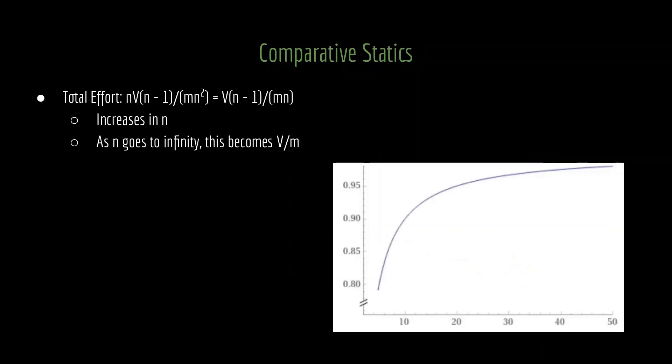The second comparative static is on the total amount of effort. And to calculate that, all we have to do is take the individual effort and multiply it by n, because we have n individuals all producing that amount. And if we do that, that gives us a total effort level of v times n minus 1 divided by m times n. This amount increases in n. So despite the fact that adding a group decreases individual effort, the aggregate amount of effort does increase. And furthermore, as the number of groups goes to infinity, the total amount of effort goes to v divided by m.